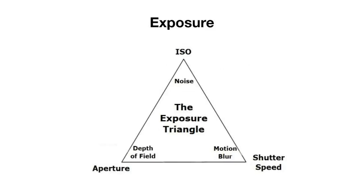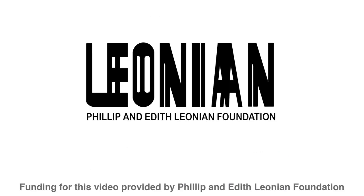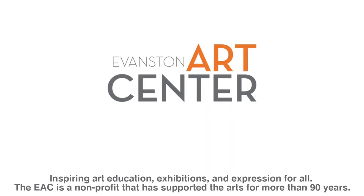I hope this video on exposure is helpful. The best way to really understand how to make manual exposures is to play around and experiment with your camera. See what happens when you change your aperture, ISO, or shutter speed independently and together. Play around with your light meter. Move through different lighting conditions and see how it impacts your exposure — this is the best way to really understand how to make a properly exposed image. We would like to thank the Philip and Edith Leonian Foundation for providing the funding to make these videos possible. Stay tuned for more videos covering Photoshop, other editing softwares, and camera tips and tricks.